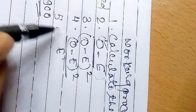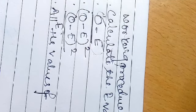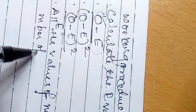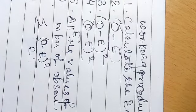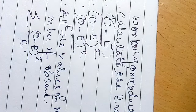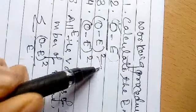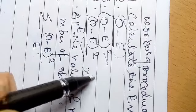The last step is to add all the values — that is, find the summation of (O minus E) whole square divided by E. In summary: first calculate E, then subtract observed from expected, then square it, then divide by E, and finally add all values to get the chi-square.